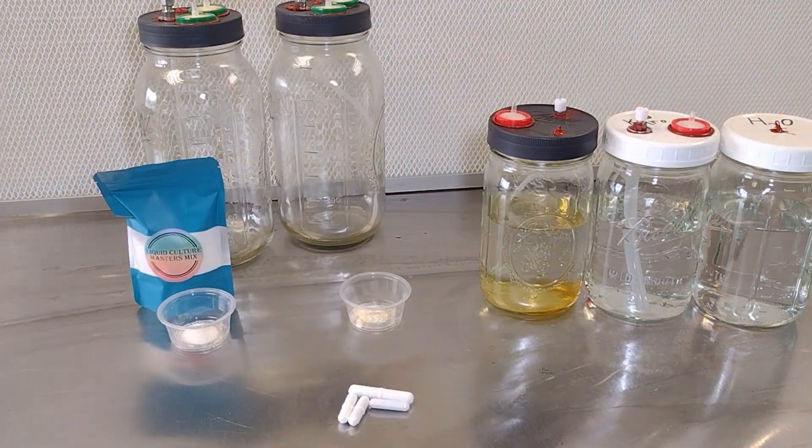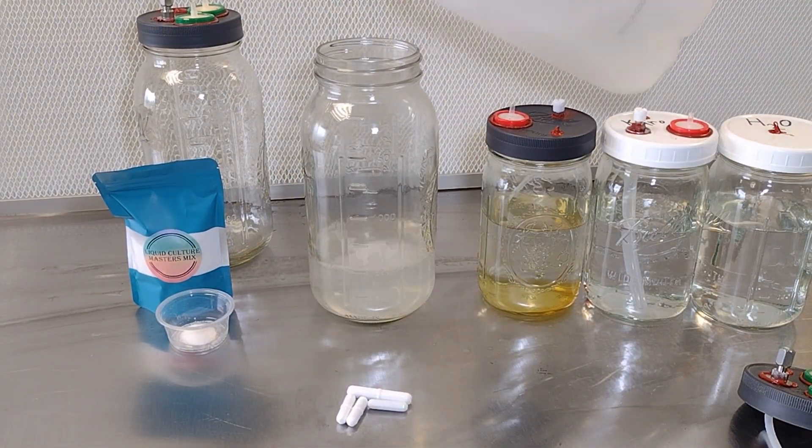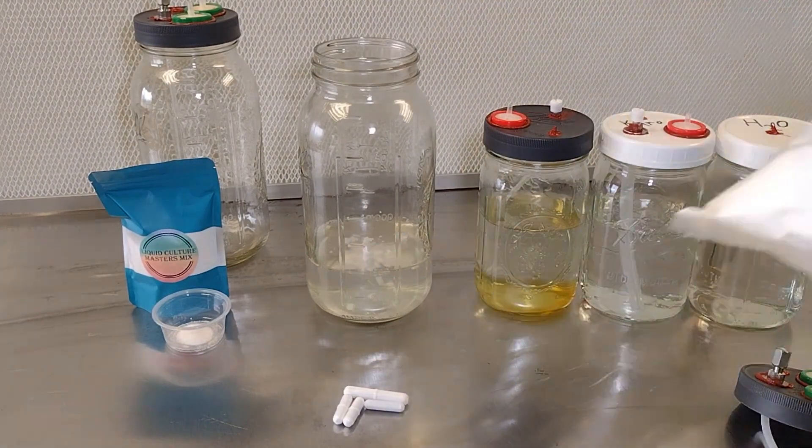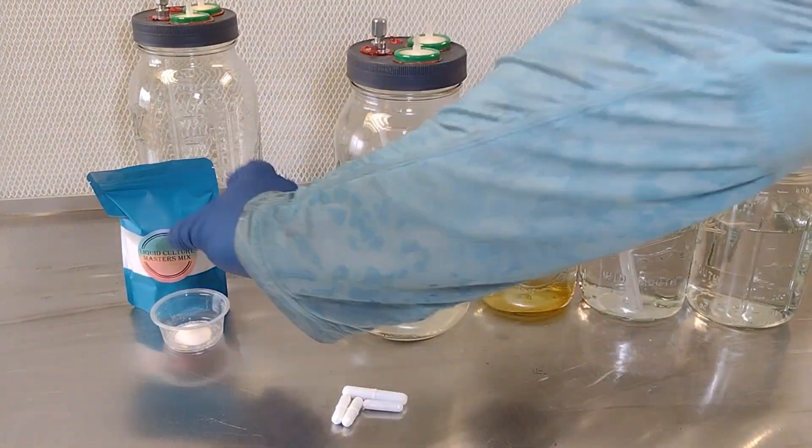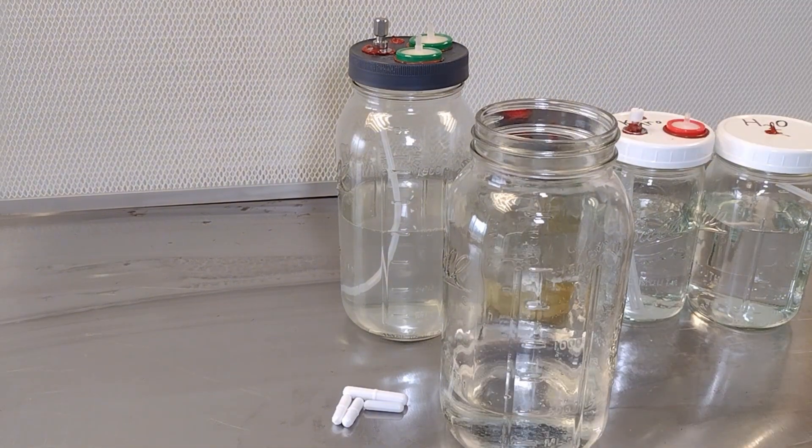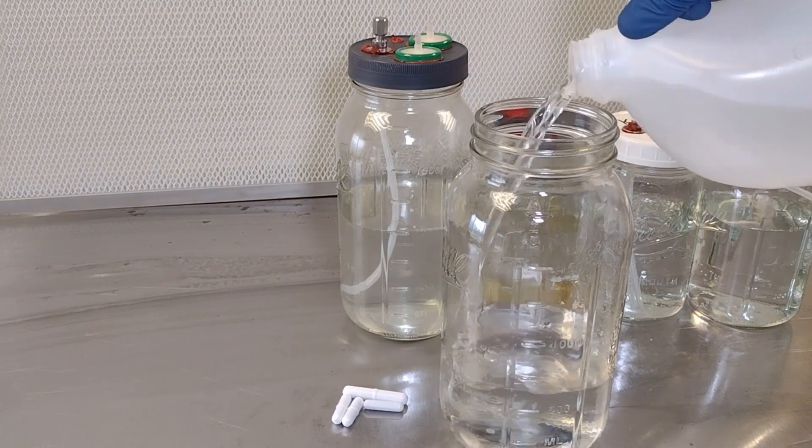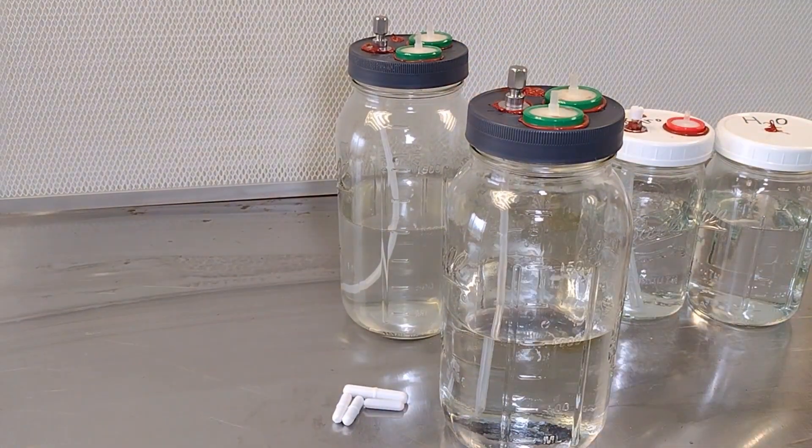Next we're going to move on to our light malt extract. So I originally weighed this out for 500ml of water, but I decided to use one of these bigger jars, so I'm going to do 1000ml. So again, for each one of these, I just added one extra scoop. Again, the scoop I'm using is 1/4 teaspoon.